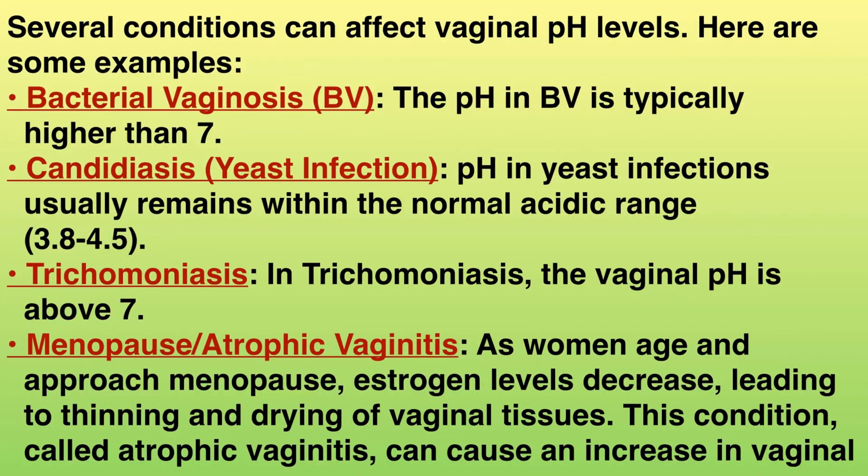Here are some examples. Bacterial vaginosis — the pH in bacterial vaginosis is typically higher than 7. Candidiasis, or yeast infection — pH in yeast infections usually remains within the normal acidic range of 3.8 to 4.5. Trichomoniasis — in trichomoniasis, the vaginal pH is above 7.